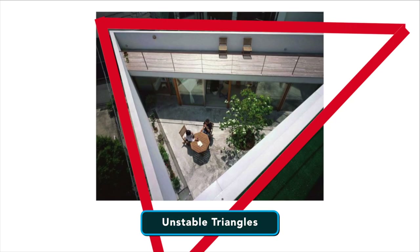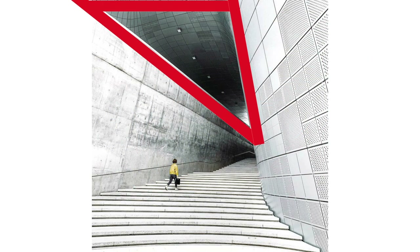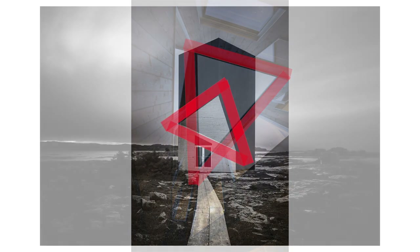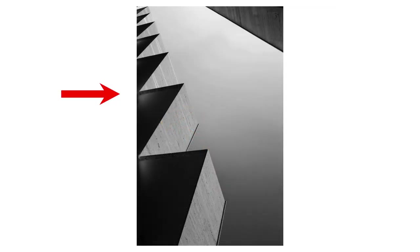There are also unstable triangles. If you want to create an unstable feeling in the photograph, a quick and easy way to do this is to include an upside-down triangle or at least a triangle in a weird orientation. Triangles like this are excellent at drawing attention to something seemingly insignificant or bland, making your photo or scene seem more interesting.